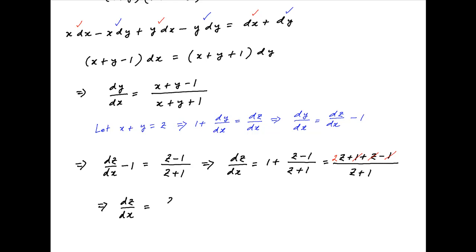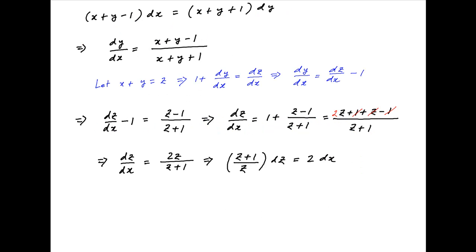This implies that dz/dx is equal to 2z/(z + 1). Separating the variables we get (z + 1)/z dz is equal to 2 dx, or equivalently (1 + 1/z) dz is equal to 2 dx.